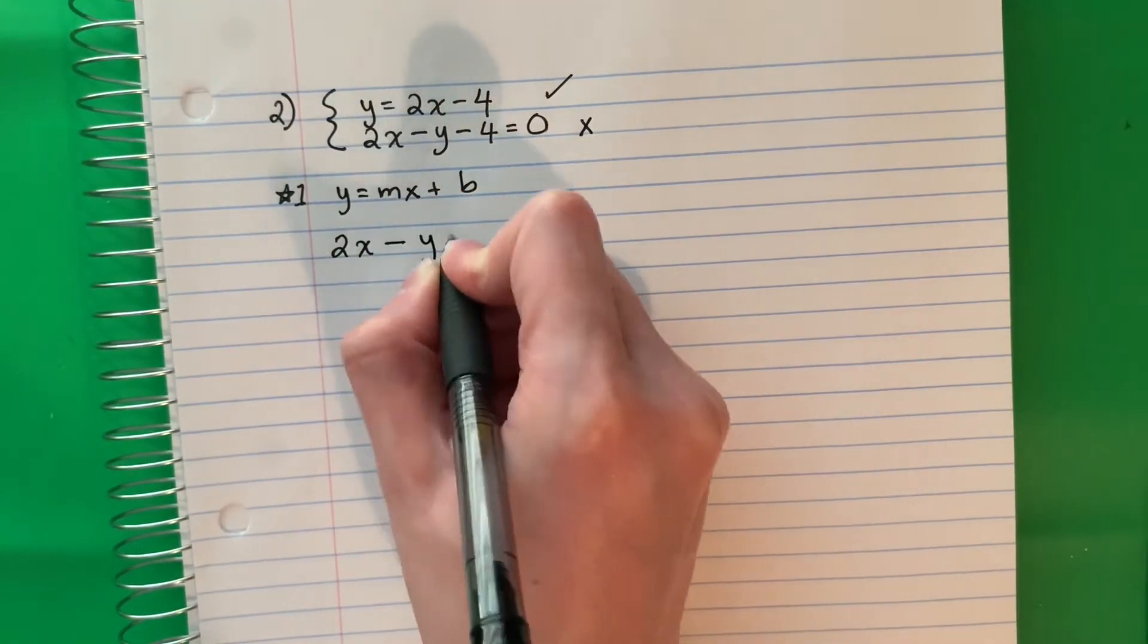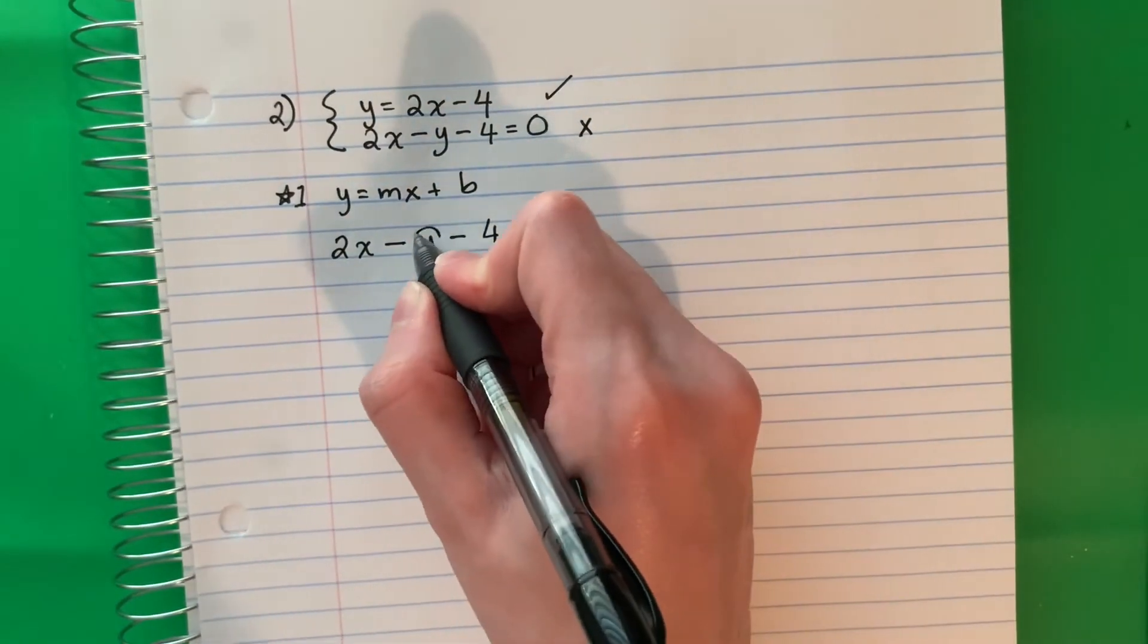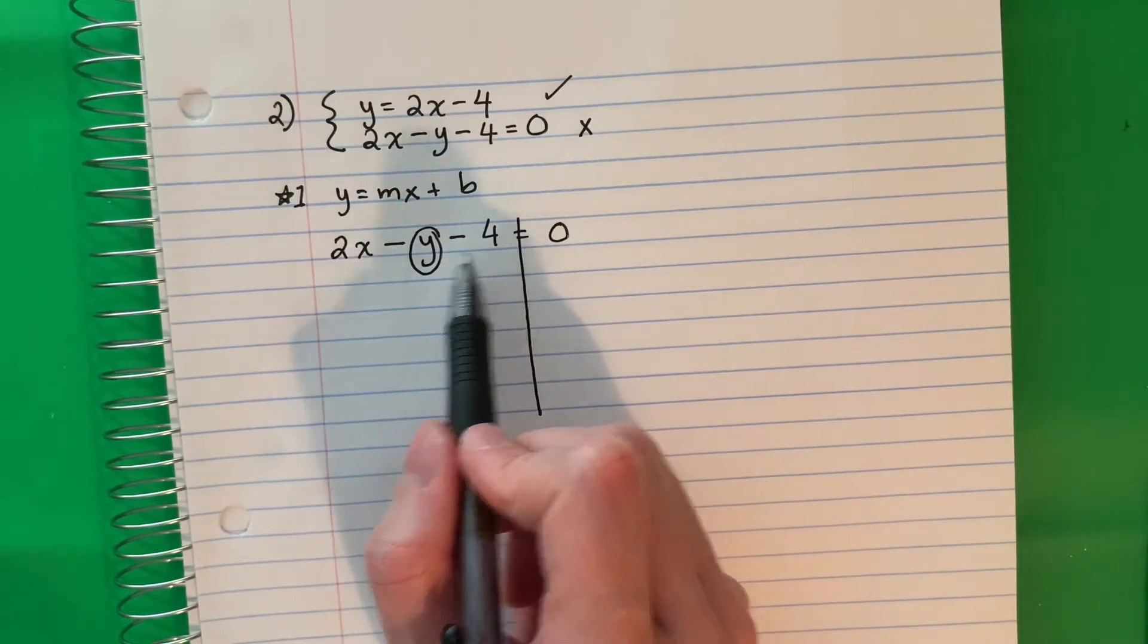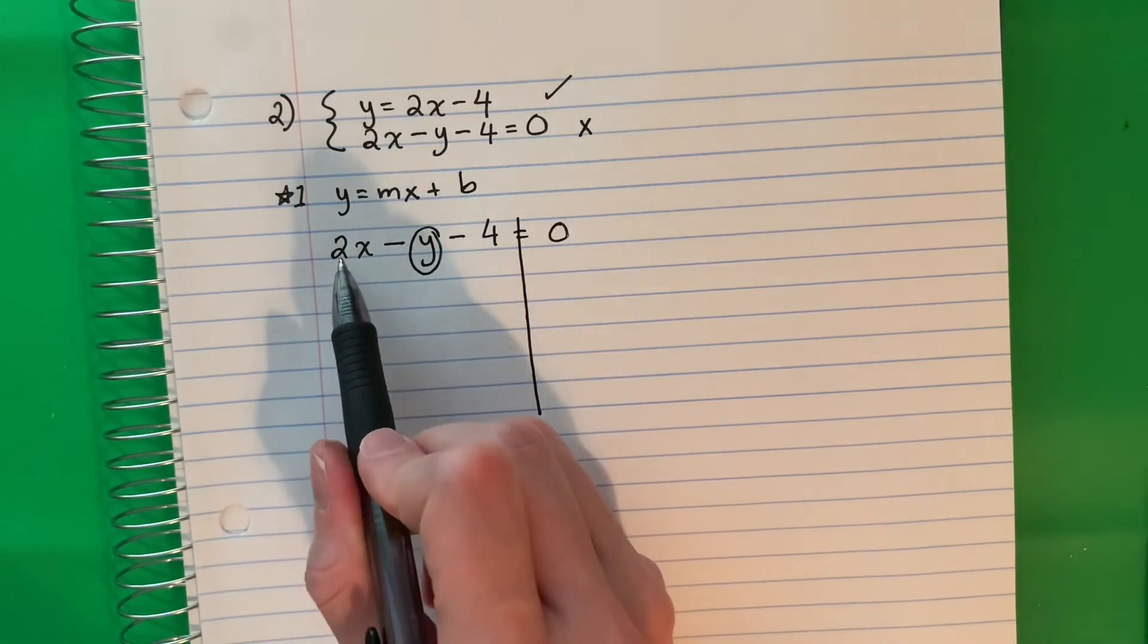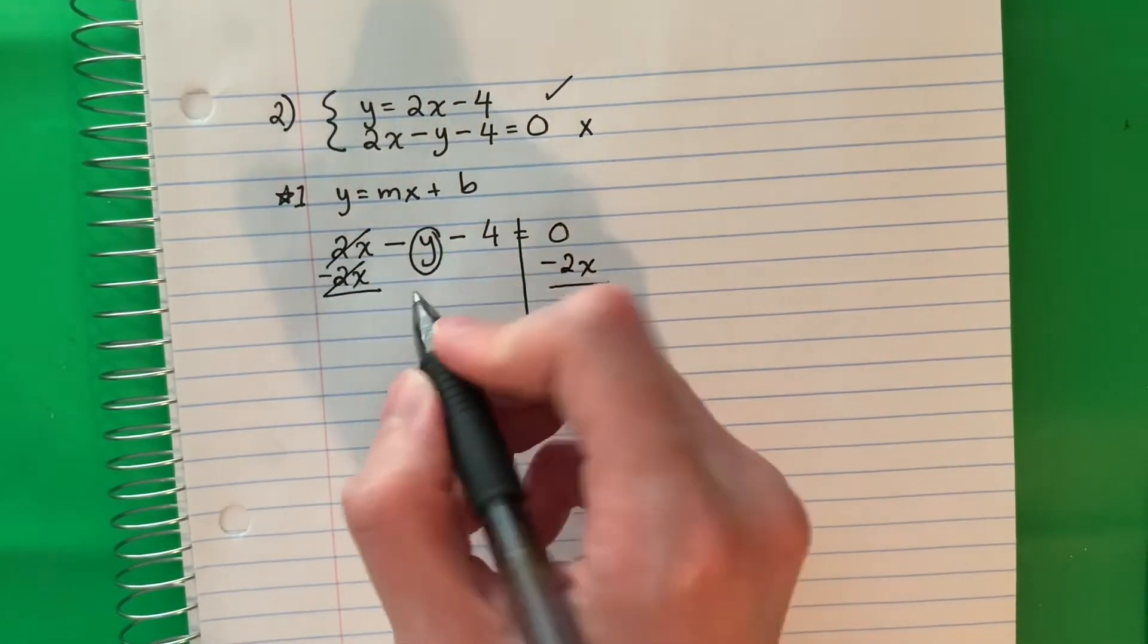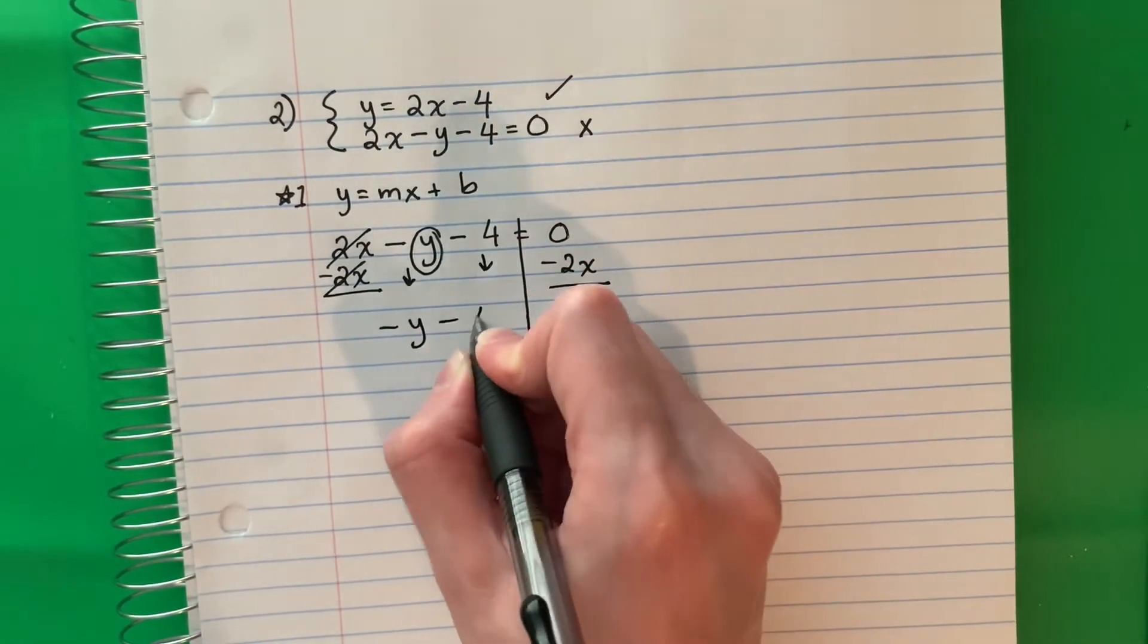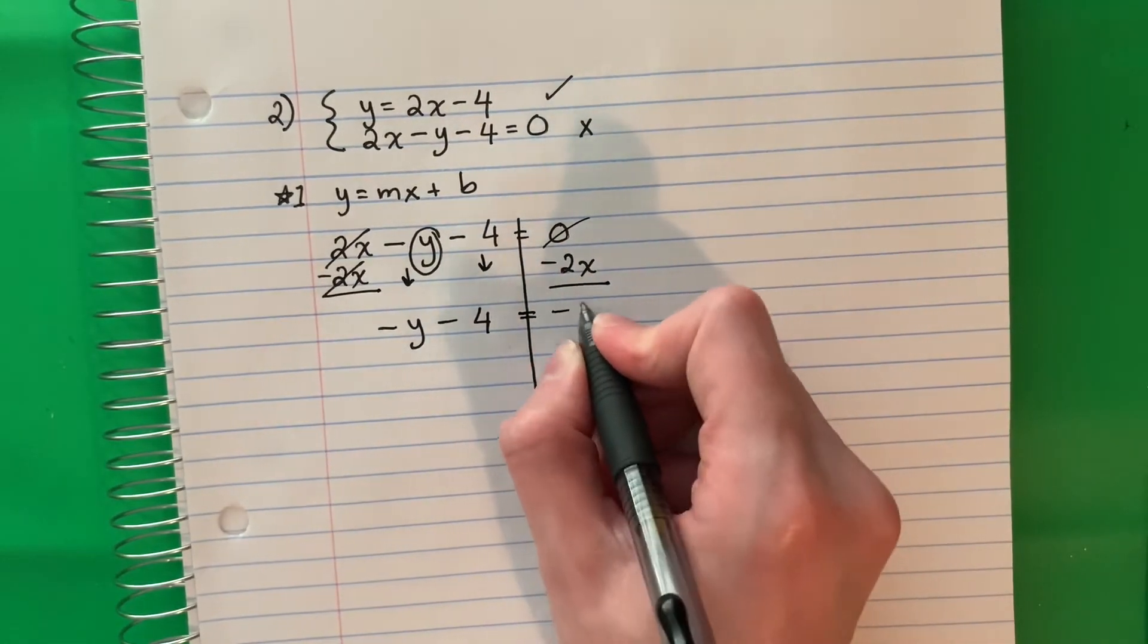So 2x minus y minus 4 equals 0. I want the y alone, so I have two things that I need to move. It doesn't matter which one you move first, but don't move the y. I'm going to move the letter first, the x. This is positive 2x, the opposite is negative 2x. So minus 2x. Copy minus 2x. 2 minus 2 is 0. Cancel. Copy negative y and copy minus 4 equals. 0 minus 2x, 0 cancels out, it's just minus 2x.